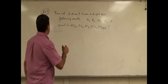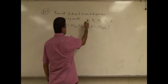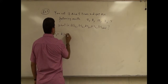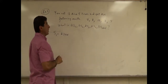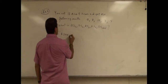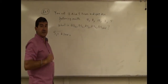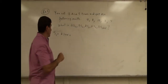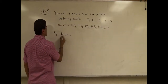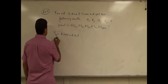Entropy of state one is kln(W). Remember when we did this in the theory section — for four, there were three ways of getting four. So we can call this S4, and that was kln(3).